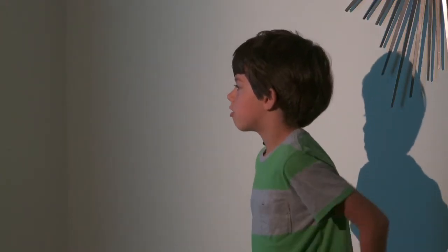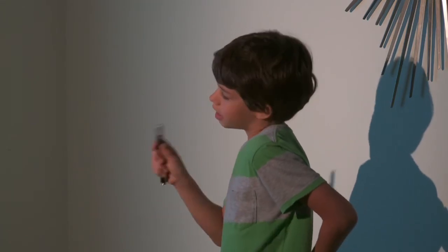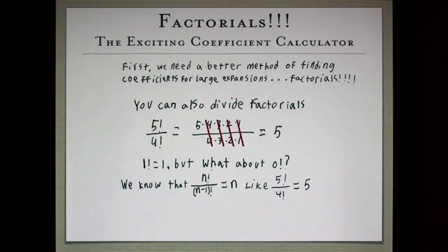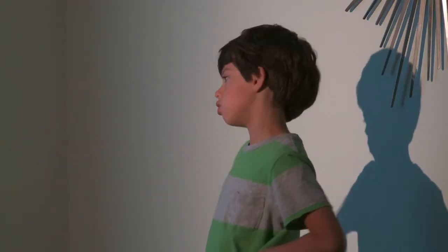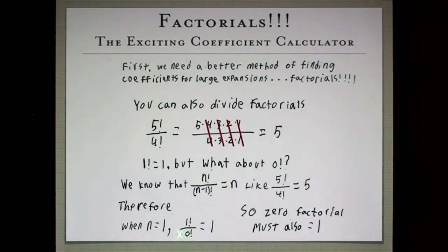We know that 1 factorial is 1, but what about 0 factorial? Here's the proof. We know that n factorial over n minus 1 factorial equals n, like the example we just showed you. Therefore, when n equals 1, then 1 factorial over 0 factorial has to equal 1 because 1 factorial is 1. The only thing 1 can be divided by is 1. So therefore, 0 factorial must equal 1.